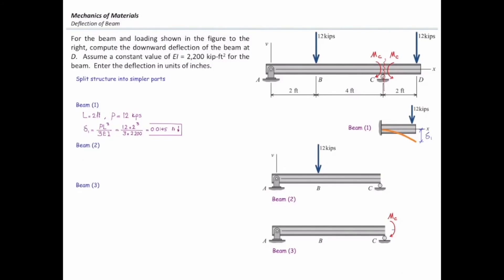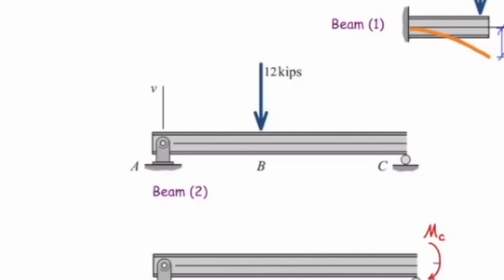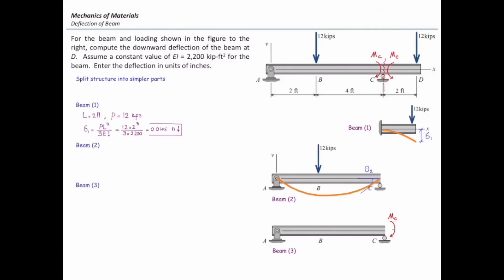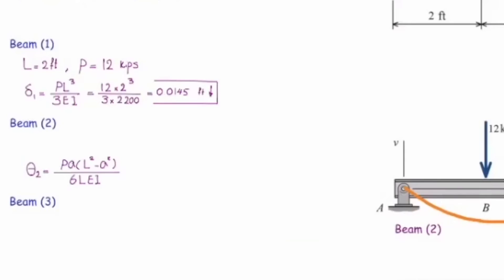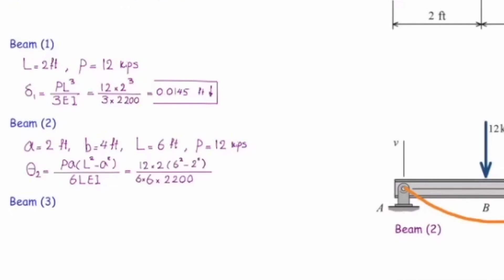Now let's talk about beam number two and beam number three. For beam number two, because of the concentrated load the beam deflects, and I need to determine the slope at point C rather than the deflection directly. Going to the equation for theta: A is 2 feet from the left side, B is 4 feet to the right side, total length is 6 feet, and the force is 12 kips. Plugging the values into the equation gives slope equal to 0.0097 radians.